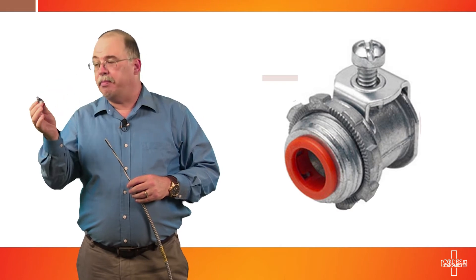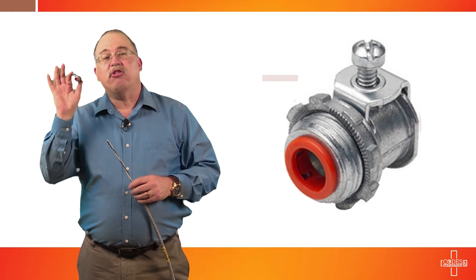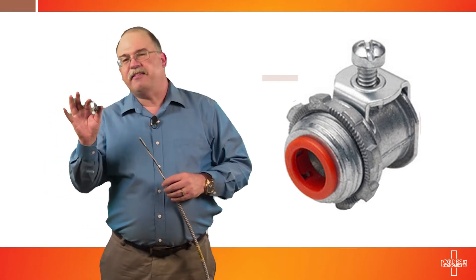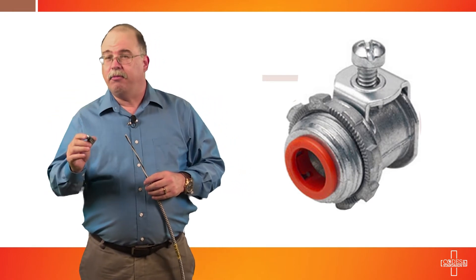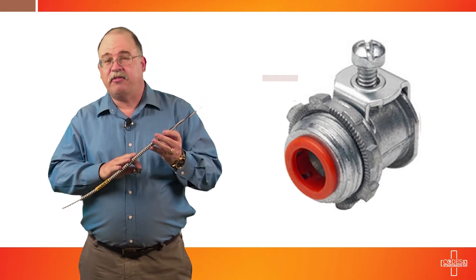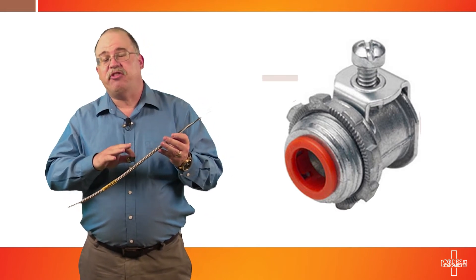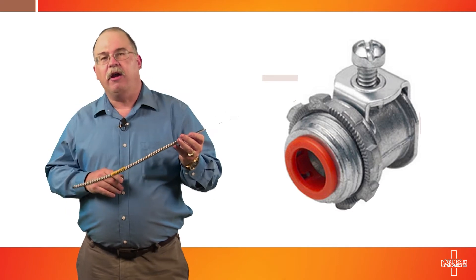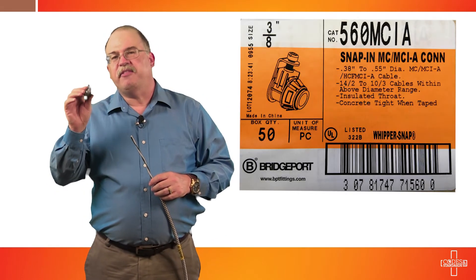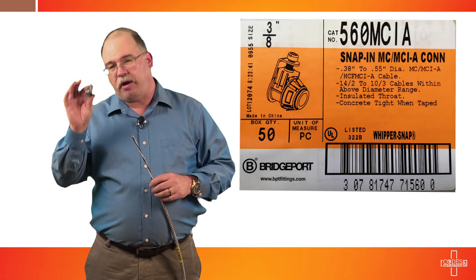Now this fitting we're using today was supplied to us and it is actually a triple function fitting. What does that mean? Well, this fitting is designed for use with type AC cable, type MC cable, and the more enhanced type MCI-A products like we have here in our Encore type MC smart ground. Now, once you select the proper fitting, it'll say on the container or packaging that it's for use with an MCI-A product. That's what we have here.